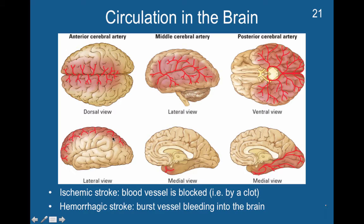In the dorsal and lateral views, you can see that the anterior cerebral artery covers the whole anterior and dorsal portion of the brain. The middle cerebral artery is lateral — you can only see it in the lateral view — and it basically goes up the sides, supplying the middle of the brain on either side.